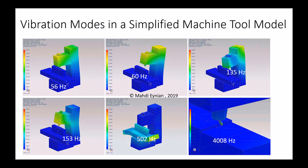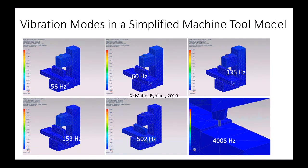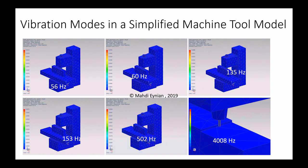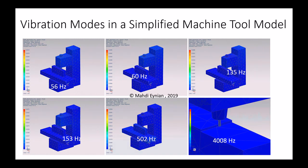At very low frequency range, we can see some sort of torsion of the column that causes the tool or the spindle to go in the commonly known X direction with respect to the workpiece.